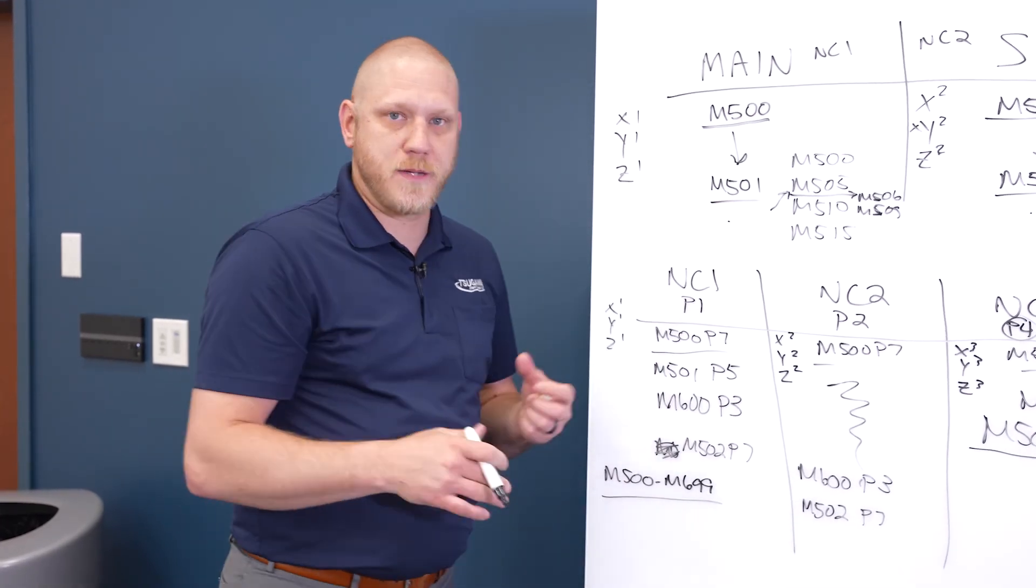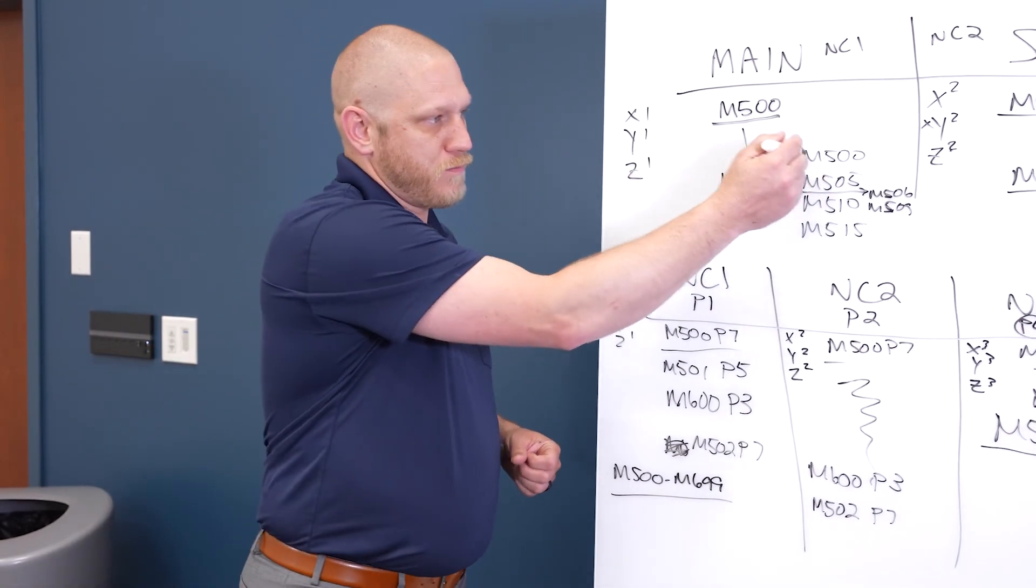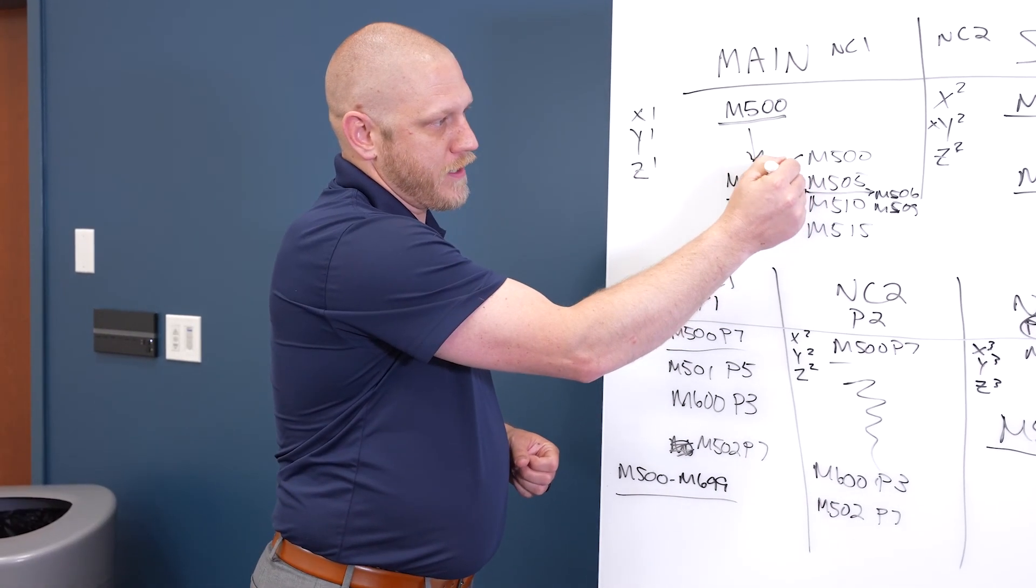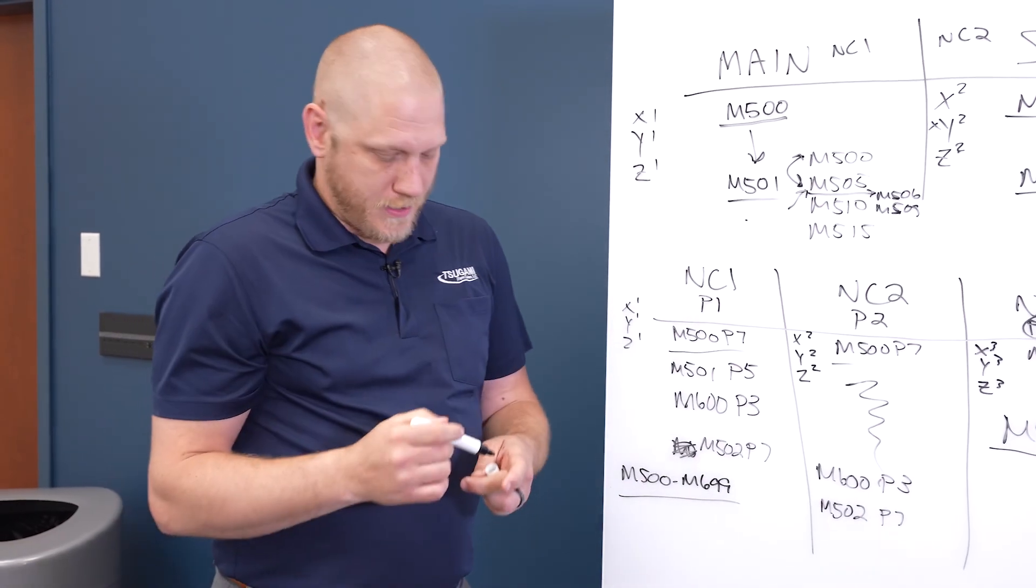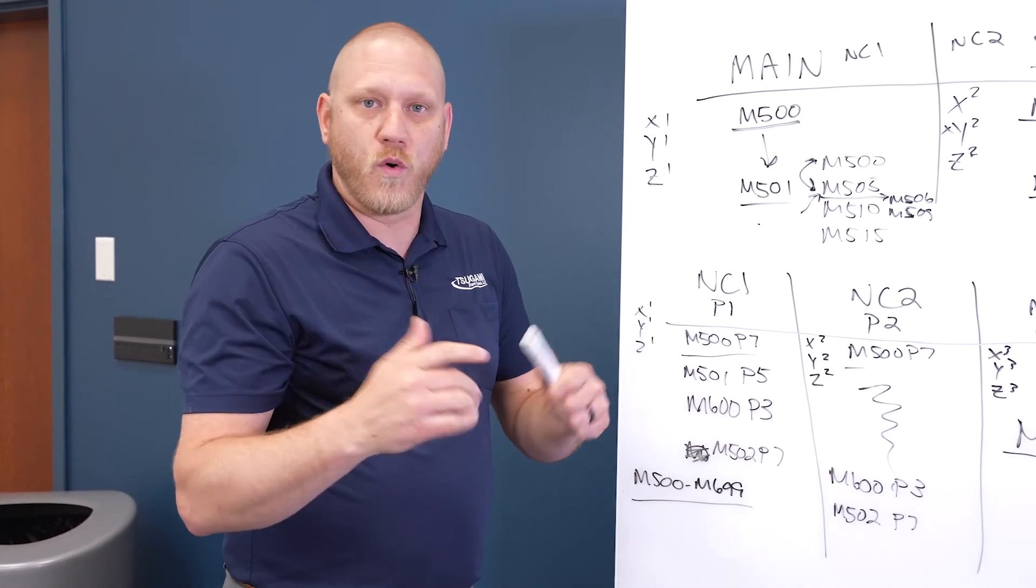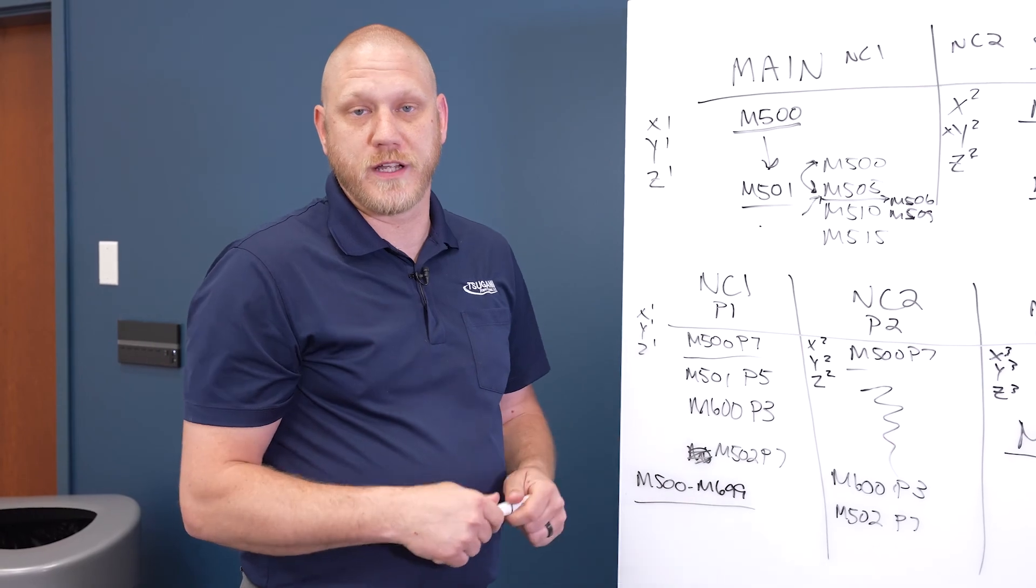So just some quick tips for cleaner programs starting, put a gap in between your weight codes, maybe five, maybe 10, if you want to. You got plenty to choose from. Just helps with the numerical order of the program itself with the weight codes.